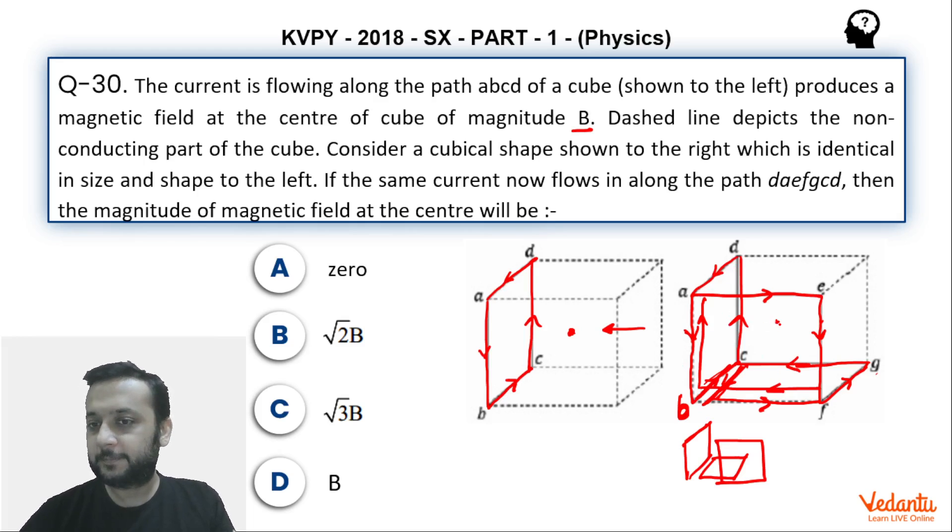So the magnetic field due to this will be B in the x-axis thik hai. Agar apan is square ki baat kare, to is square ki magnetic field bhi x-axis pe hogi, by the right hand rule you can say ki magnetic field direction x-axis pe aayegi. To usi logic se apan keh sakte hai ki same agar apan baat kare, to yaha bhi magnetic field ki value x-axis pe aayegi is square se.